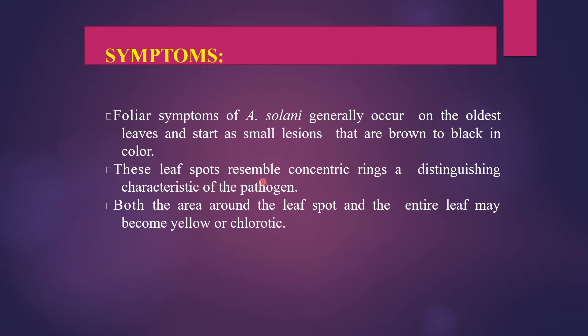These leaf spots resemble concentric rings — this is the main important point to notice in early blight. Both the area around the leaf spot and the entire leaf may become yellow or chlorotic, meaning the leaf spot becomes entirely yellow or turns chlorotic.